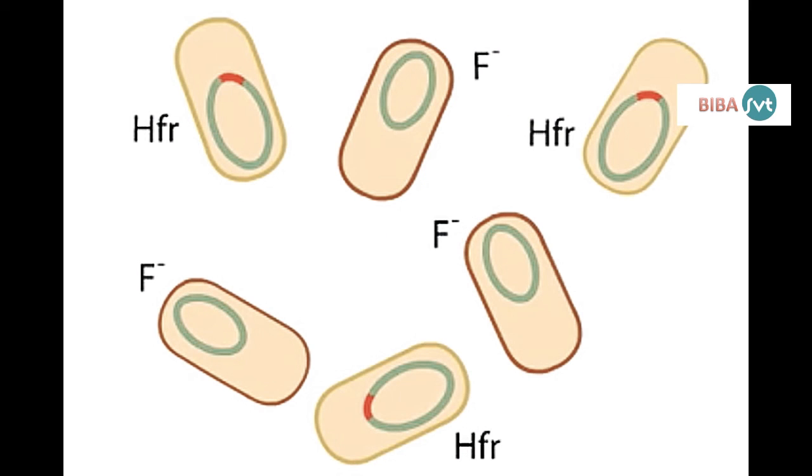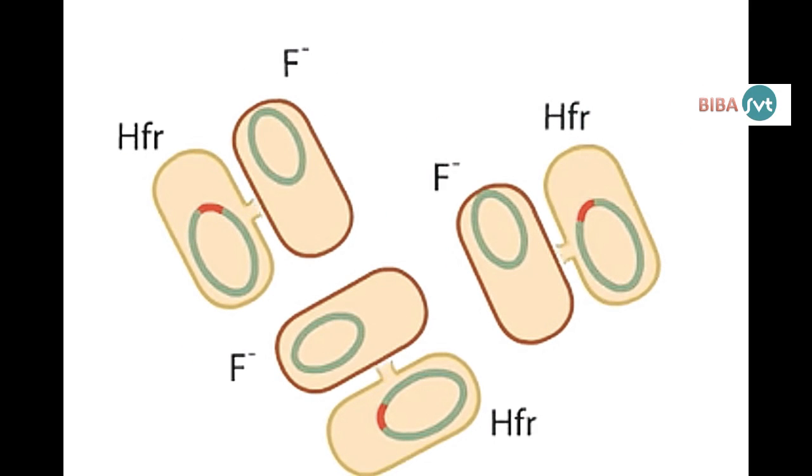When many HFR and F- bacteria are mixed, conjugating pairs can form quickly. F origins are nicked and donor strands begin to move into recipients at about the same time in all established pairs.